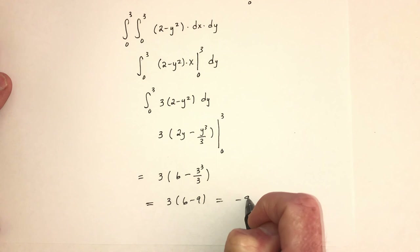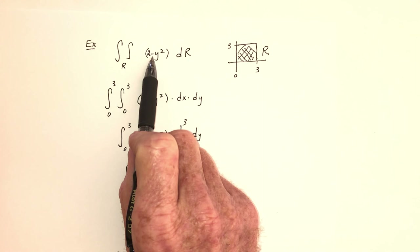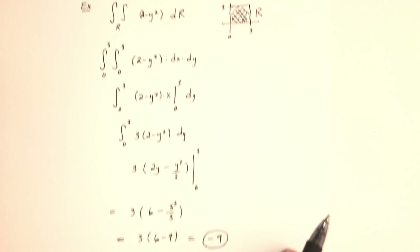How could it be negative if there are no negatives in here? Well, this function is going below the xy-plane - it's underground. So that's why it could be negative.